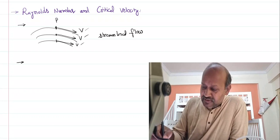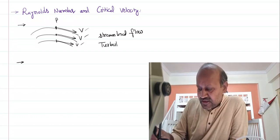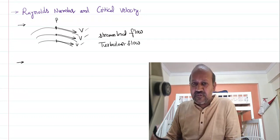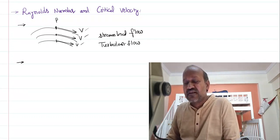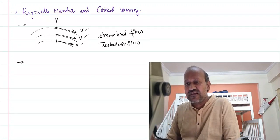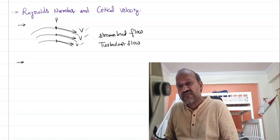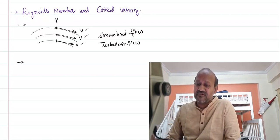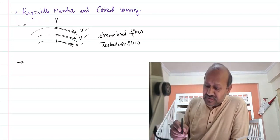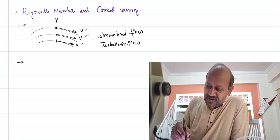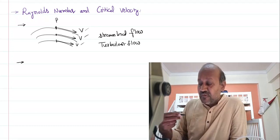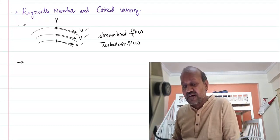There is another type of flow — turbulent flow, or non-streamlined flow. Non-streamlined flow simply means the opposite of streamlined flow: each particle does not have the same velocity at a given point. Different particles of the fluid at a given point are having different velocities.